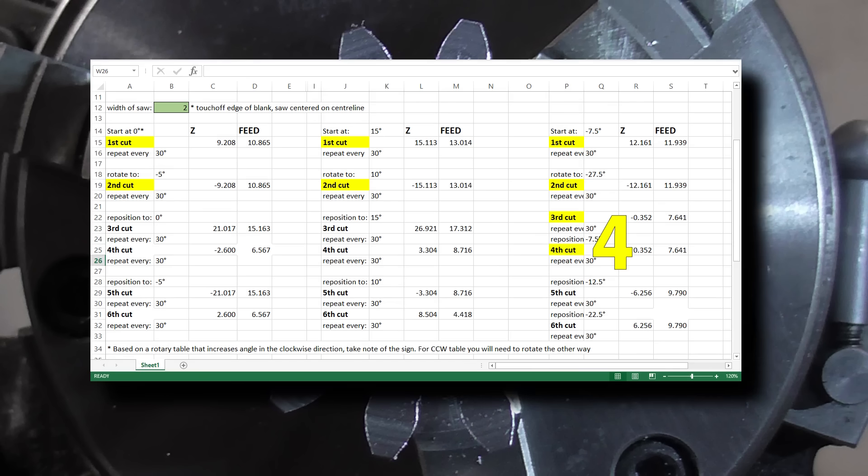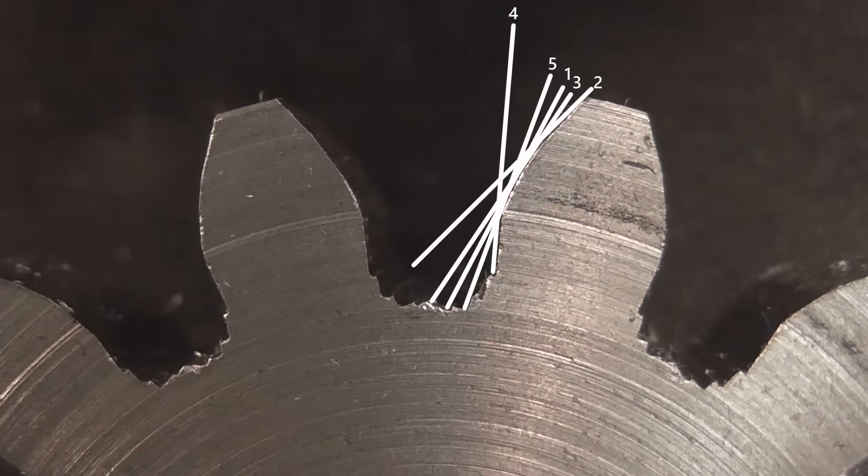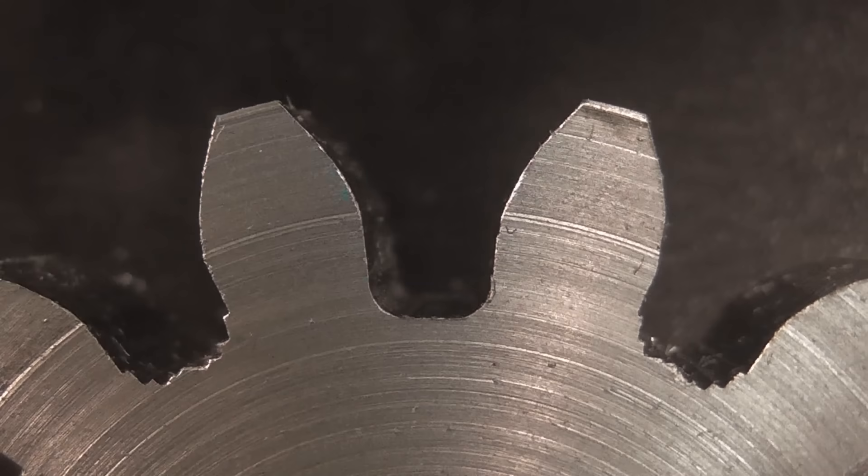I next made this pair of cuts, then this pair. A total of five cuts each side of each tooth, before cleaning up the bottom with an end mill.